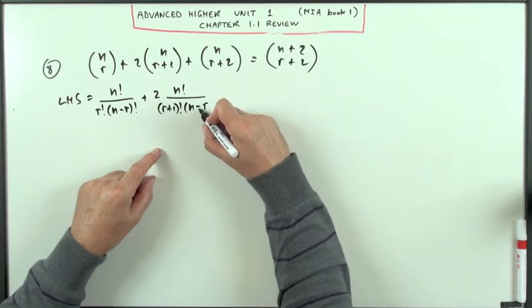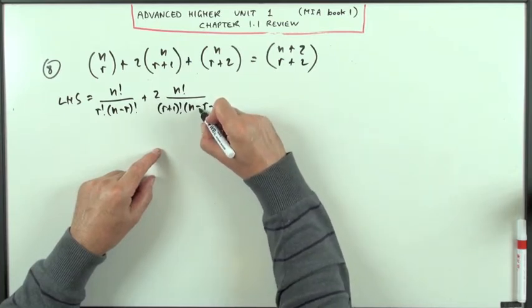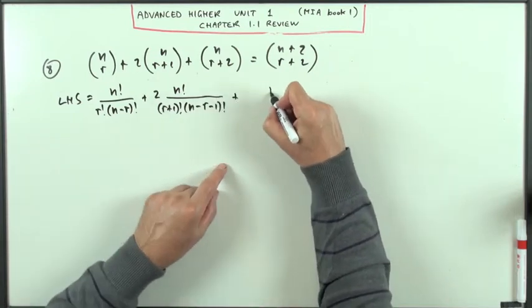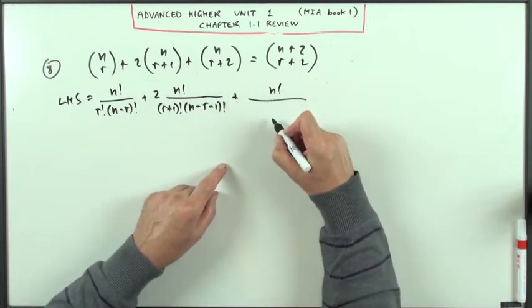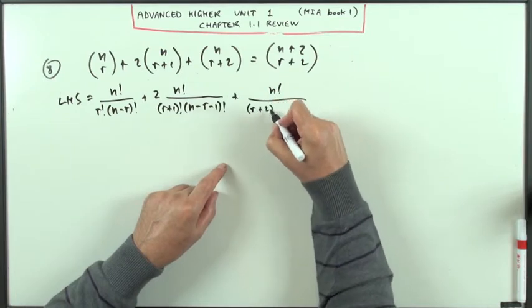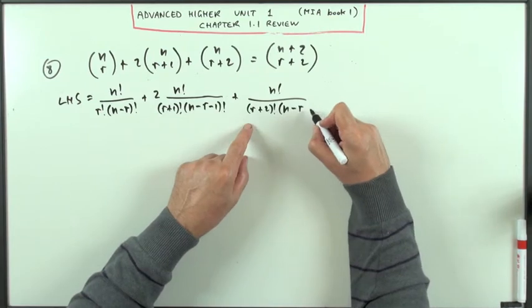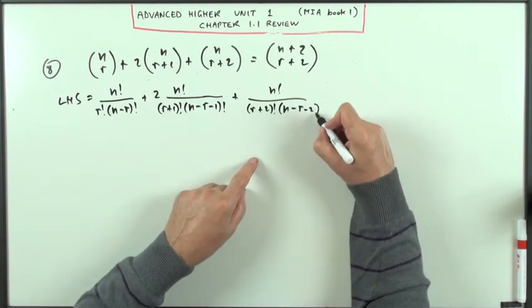So n minus r plus one is the same as minus r minus one factorial, plus n factorial over r plus two factorial times n minus r plus two, so n minus r also minus the two factorial.